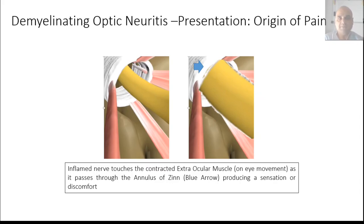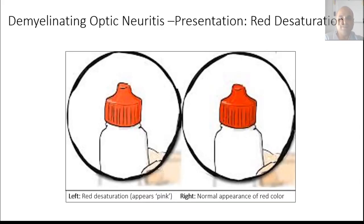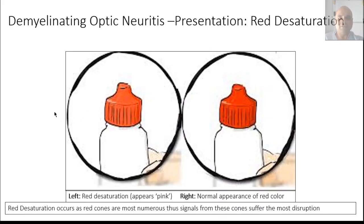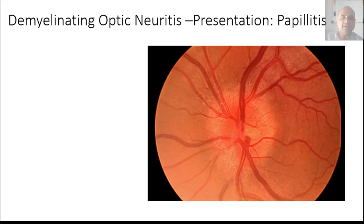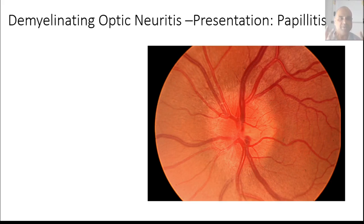This picture demonstrates red desaturation — red, as shown on the right side of the picture, appears as pink as shown on the left side when experiencing demyelinating optic neuritis. The next image shows the appearance of the optic nerve head in a patient with papillitis. You cannot make out the margin of the optic disc, you cannot see the cup, and even the rim appears more congested. These are the features of inflammation — the indistinct margin is due to inflammatory exudate covering it, the cup is obscured for the same reason, and the rim is congested due to vasodilation.